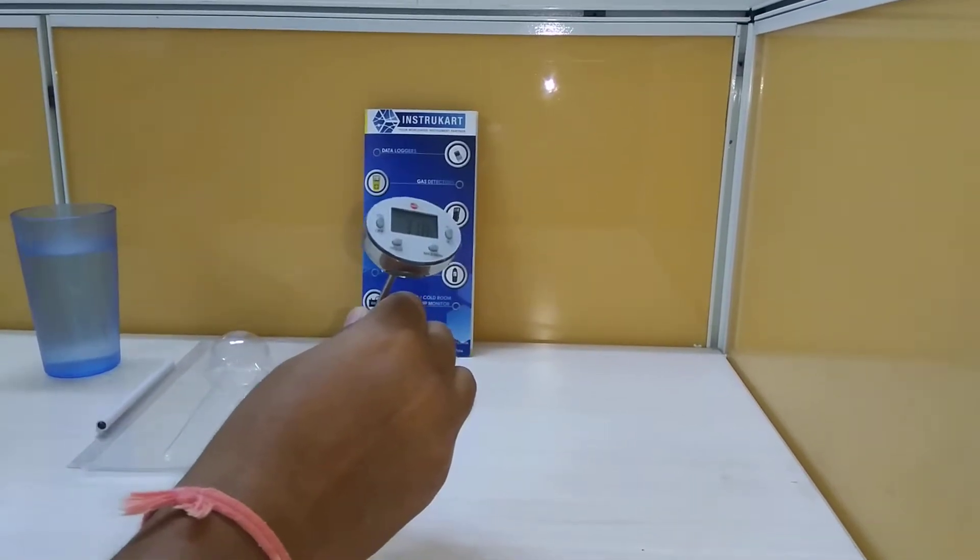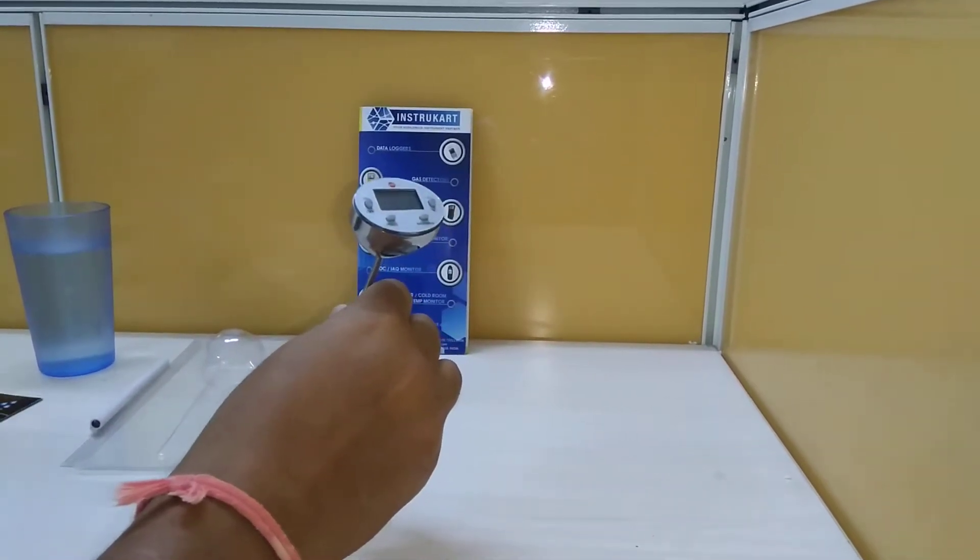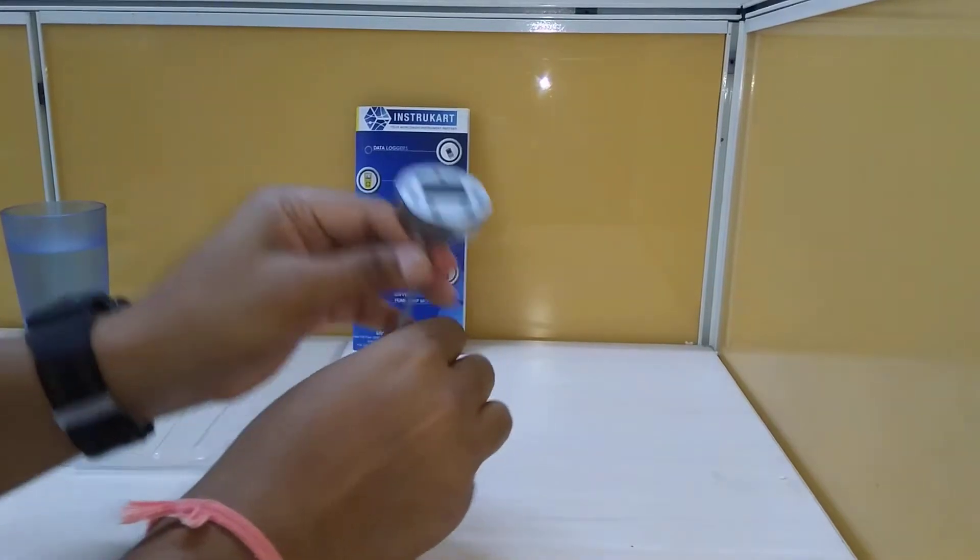This thermometer has a range of minus 20 to plus 230 degrees Celsius, which is a great range from minus to plus.